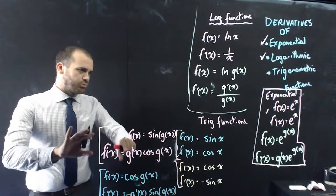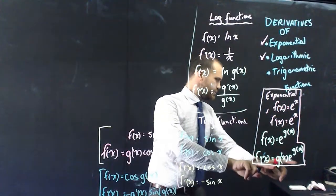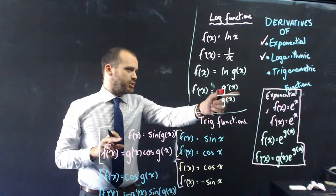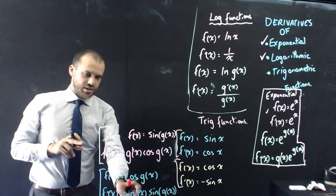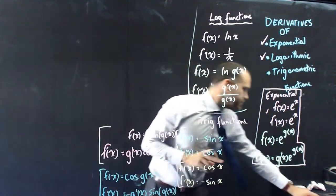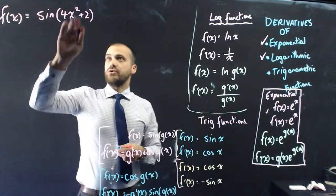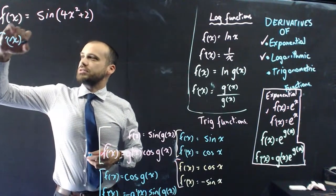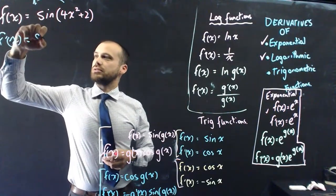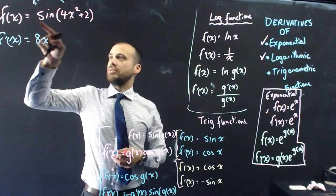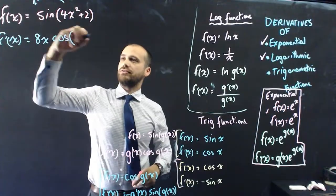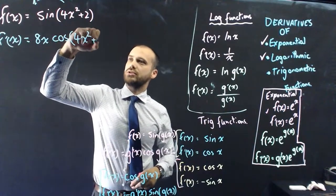You should see a bunch of similar stuff happening across all these rules - g dash of x out the front each time. So if f of x equals sin of 4x squared plus 2, then f dash of x equals the derivative of the inside - which is 8x - out the front, sin becomes cos, and the function stays the same: cos of 4x squared plus 2.